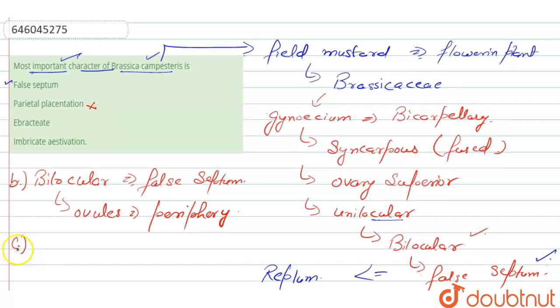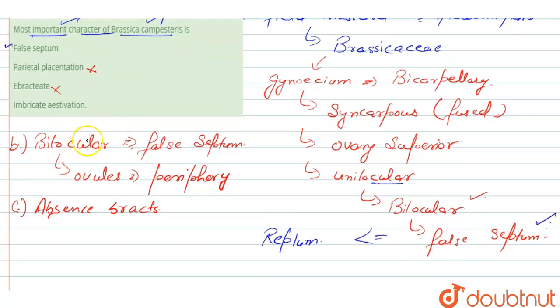Next is ebracteate. So this option is also incorrect. Ebracteate means having the absence of bracts, that is the outer part.